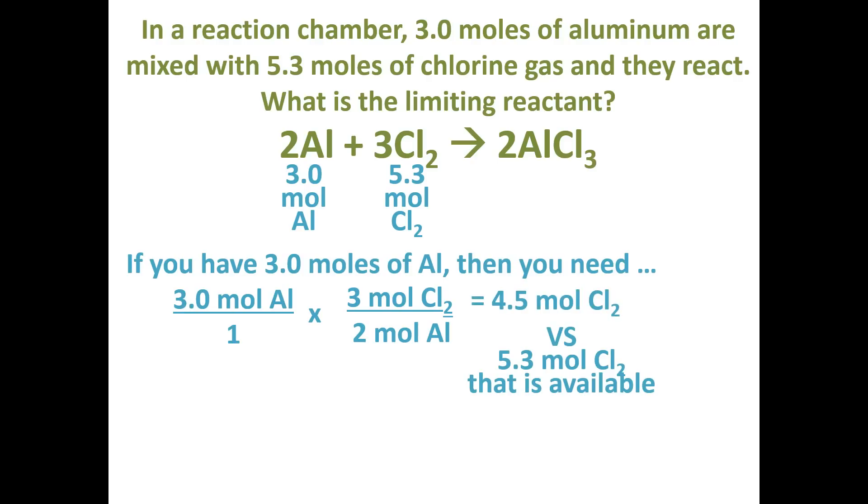We're going to now compare this needed amount to the amount that's available. There are 5.3 moles of chlorine gas available to us, and when we compare these two numbers, we're asking ourselves a question. Is there enough chlorine gas? There are 5.3 moles available, and we need 4.5 moles. Yes, we have enough. Therefore, chlorine gas is the excess reactant. If we have enough, it's the excess,